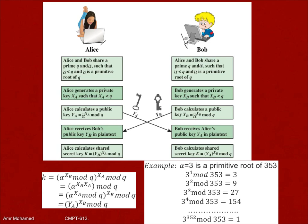This way we can exchange a secret key without having anyone in the middle being able to know what this key is, because we generated the exponent as local values only. The proof that the value is K on both sides is simple: this is YB to the power XA mod Q, which by simple math equals YA to the power XB — the same number on the other side — using the multiplicative property of mod.